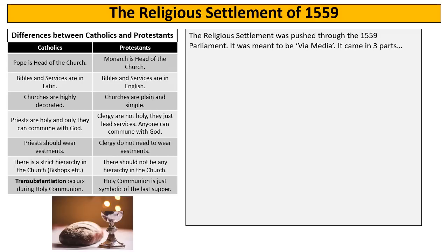Catholics believe that priests are the only people who can communicate with God and therefore should wear vestments, must not marry, and must not have children. Protestants do not believe that clergy are specially holy — they simply lead the service, and anyone can communicate with God. Clergy shouldn't wear vestments and don't need to avoid marrying.